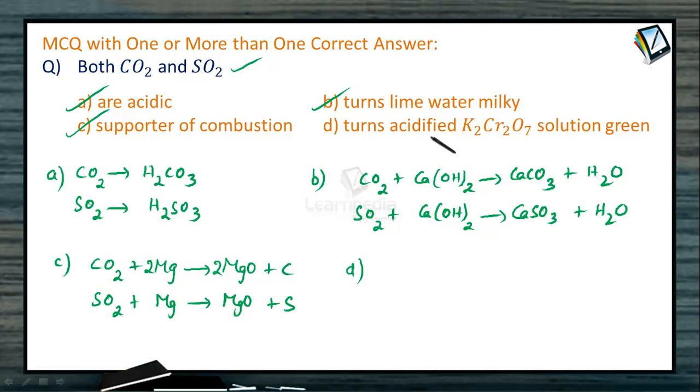If you take the case of reaction of SO2 with acidified K2Cr2O7, it is like this. This acidified K2Cr2O7 reacts with sulfur dioxide and we get potassium sulfate and the green colored chromium sulfate is formed. This is green in color. And of course, water is formed.